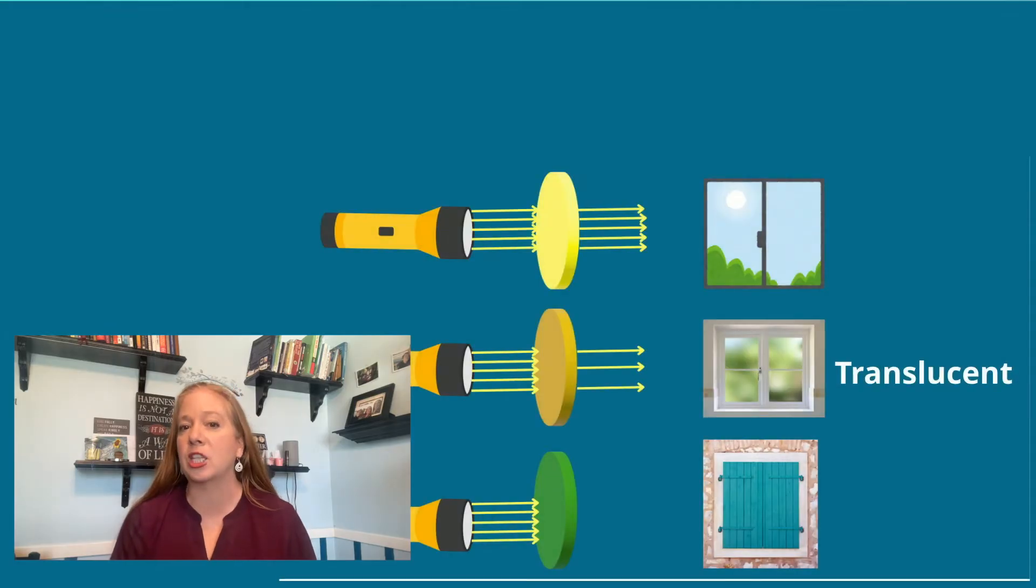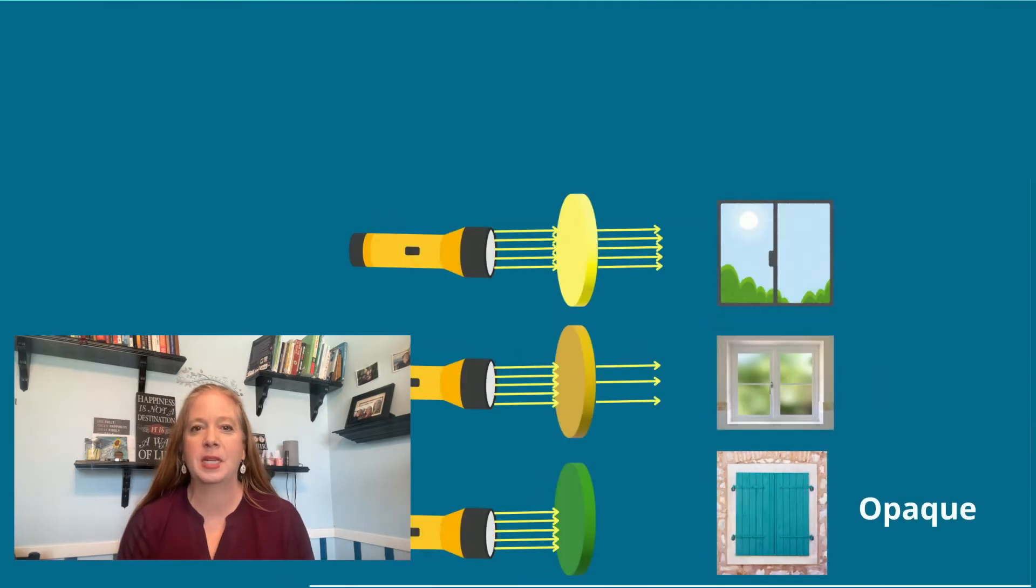Objects that are translucent, like frosted glass, scatter light, making objects appear blurry. And objects that are opaque, such as metal, don't allow light to pass through it at all.